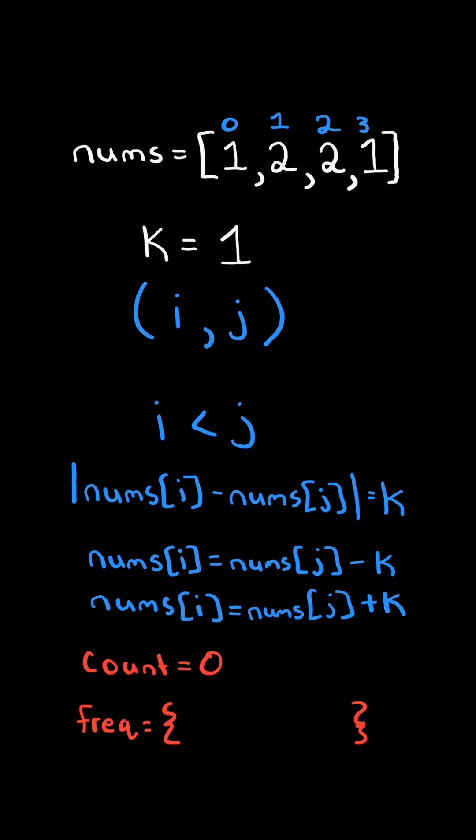We initialize a counter and a frequency dictionary and iterate through the list. We calculate the current number minus k and plus k. These numbers don't exist in our map, so we add the current number and its frequency.